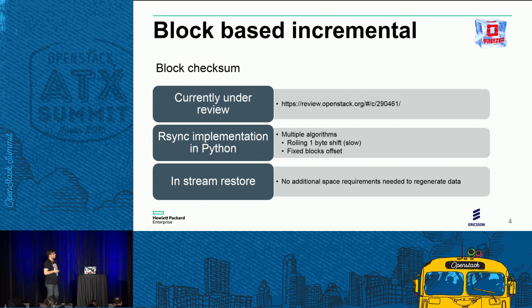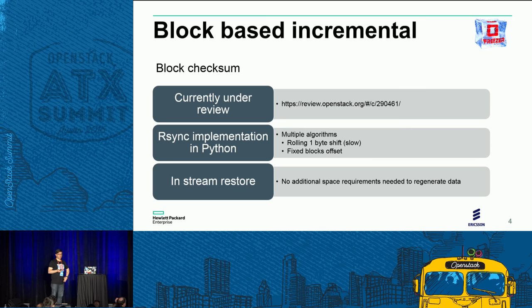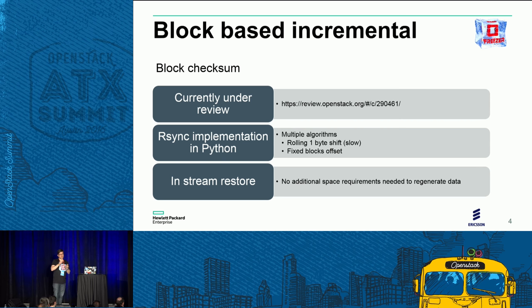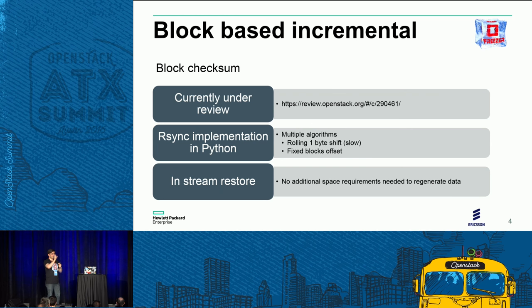Another feature under review — if you fancy a code review — is block-based incremental backup. We are providing this using an rsync approach, implementing rsync in Python. It's slightly different because with rsync you need the source and destination file available on the file system. In our approach, the Freezer agent runs through the file system, generates a signature hash for each block, which is stored in metadata.